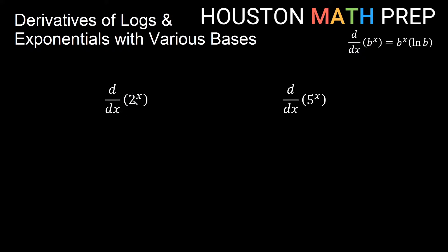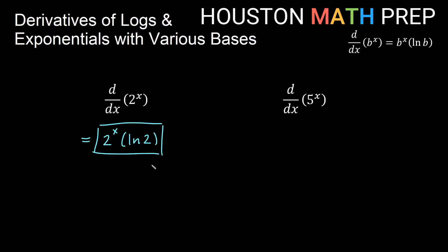The derivative with respect to x of 2 to the x: our base is 2, so the derivative of 2 to the x is the original 2 to the x times ln of the base — times ln of 2. It's indeed that short and simple. If we just remember that the derivative of an exponential is itself times ln of the base. Similarly, if our base is 5, the derivative of 5 to the x is itself times ln of 5.